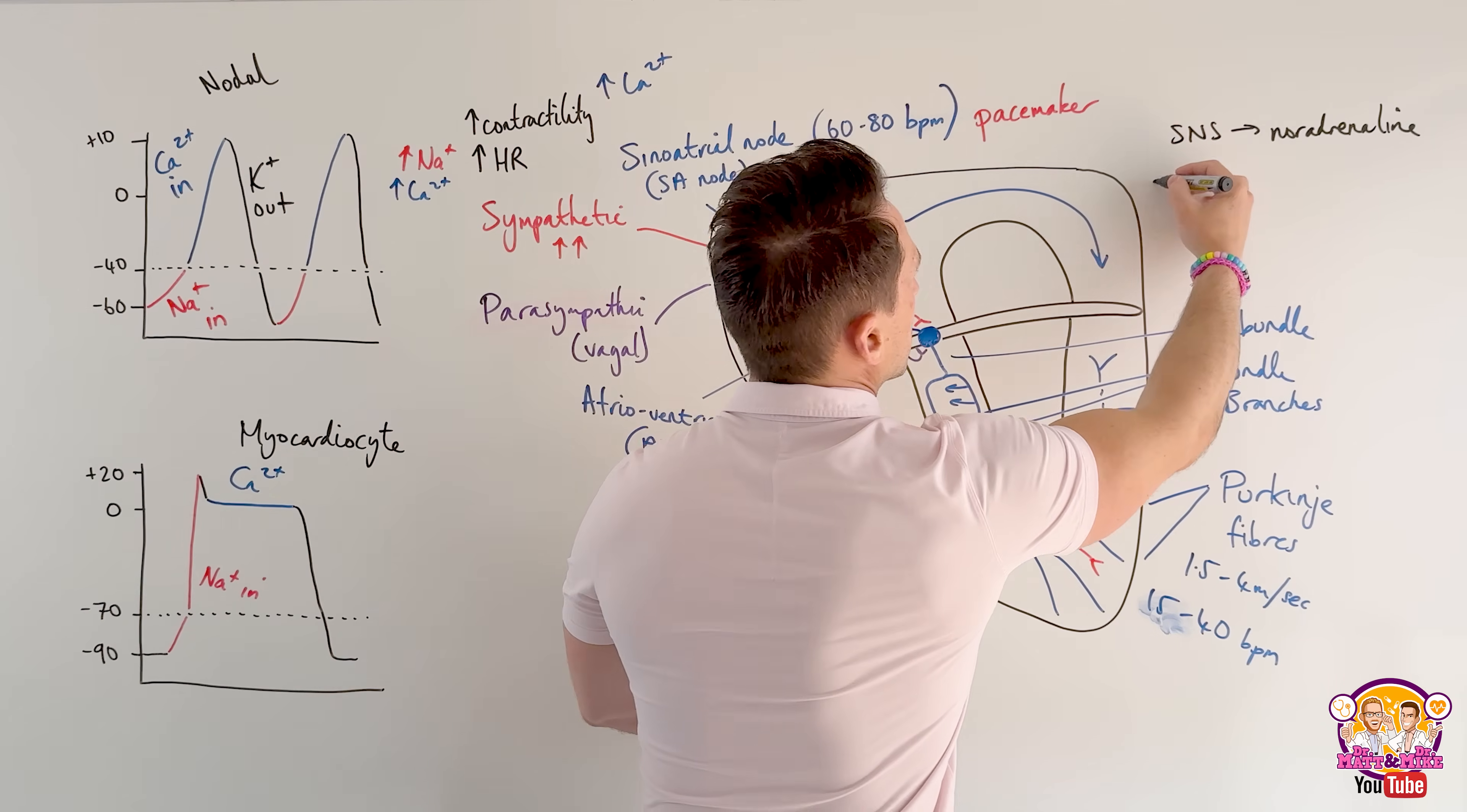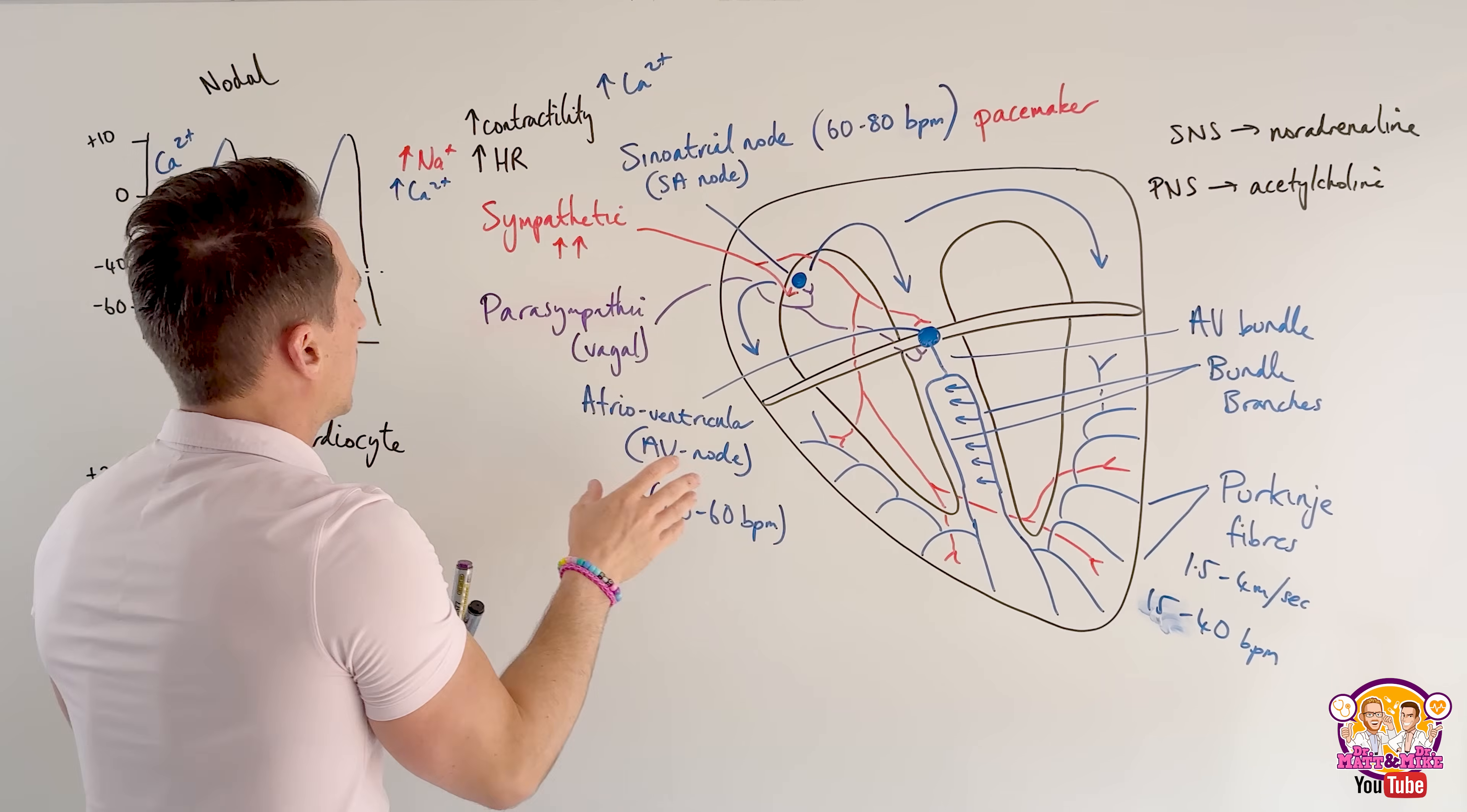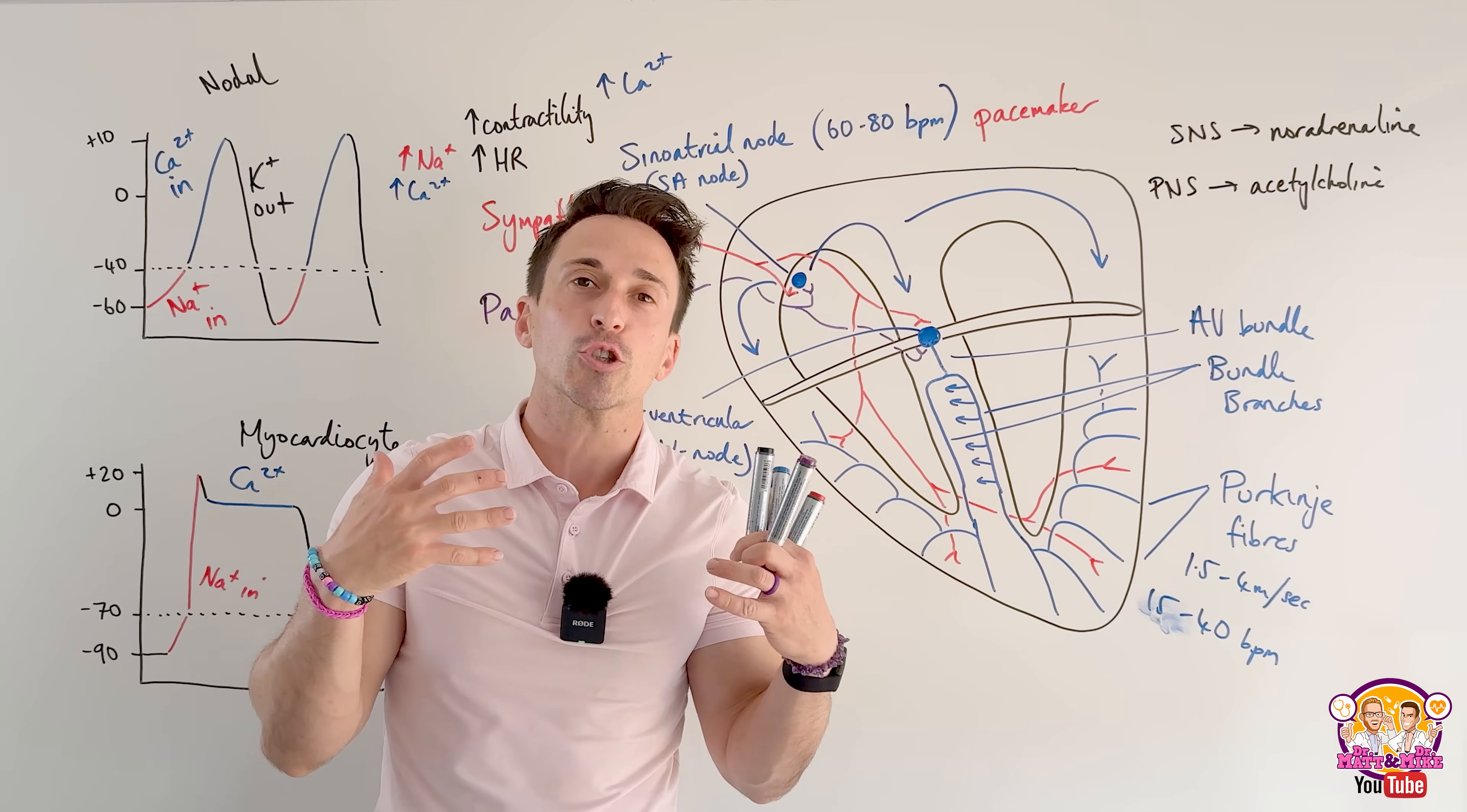And the acetylcholine that's being released opens potassium channels and the potassium leaves, making it less likely to fire off, slowing it down. So that's the conduction system and how we can control it.